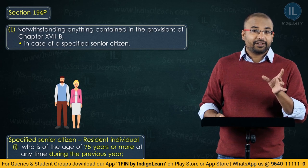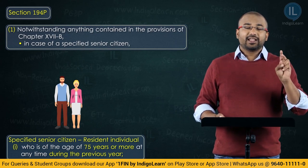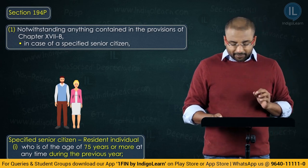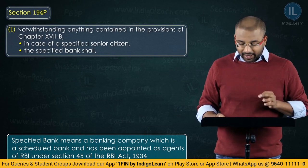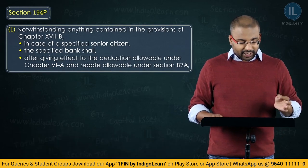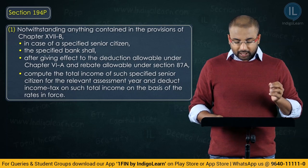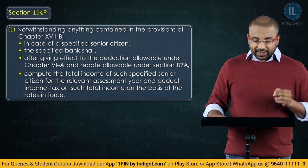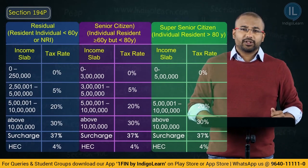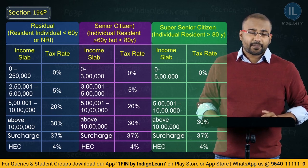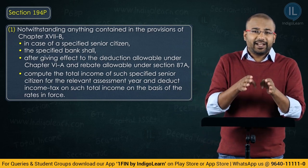Who is a specified senior citizen? You already have a hint — 75 years. Resident — very important — there are two important things: resident as well as having attained the age of 75 at any time during the previous year. The specified bank shall — it's not 'may,' it's an obligation on the bank — the specified bank shall, after giving effect to the deductions allowable under Chapter 6A and the rebate under Section 87A, compute the total income of such specified senior citizen and deduct income tax on such total income on the basis of the rates in force — the slab rates mentioned in the relevant Finance Act. So subsection 1 says the bank is obliged to deduct TDS after considering Chapter 6A deductions and the rebate under Section 87A.